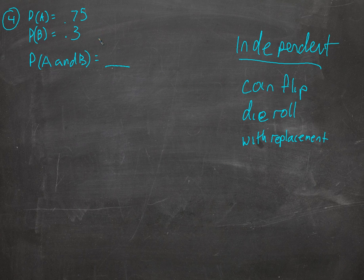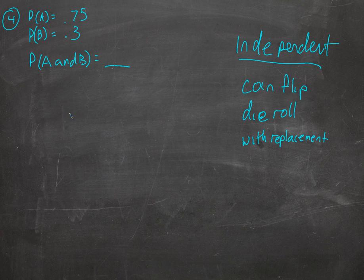In this case we're given some arbitrary probabilities and we're told that they're independent, which means we multiply them together. Now let's see why that is — let's try and visualize this.